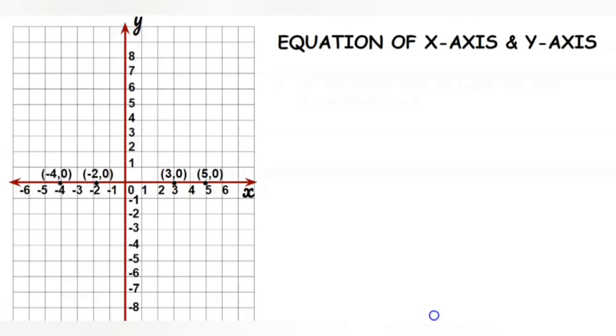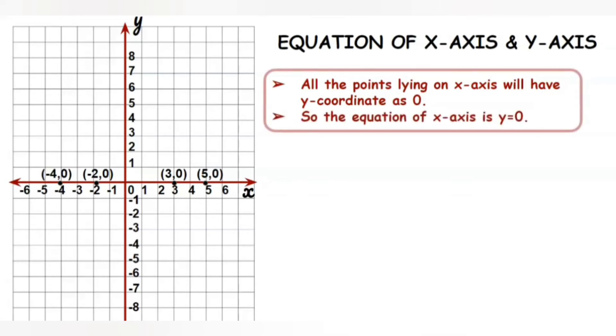So, we observe that all the points lying on the x-axis will have their y-coordinate as 0. So, the equation of x-axis is y=0.